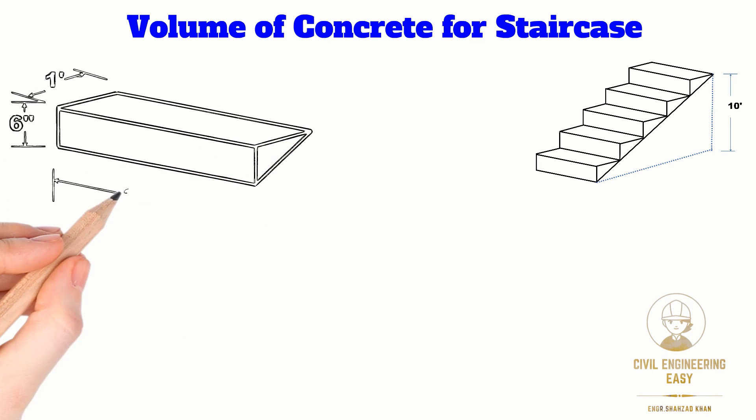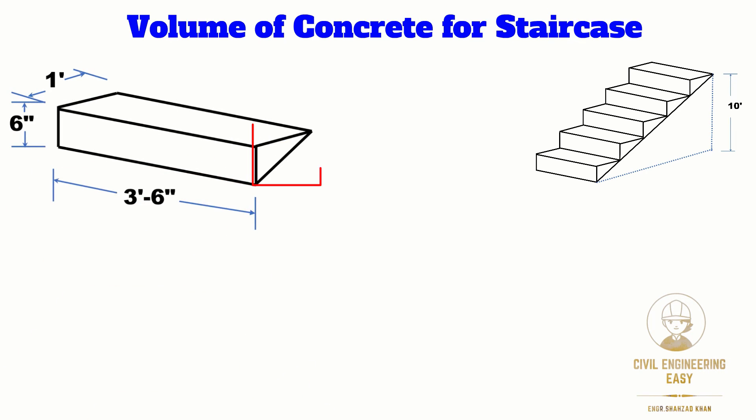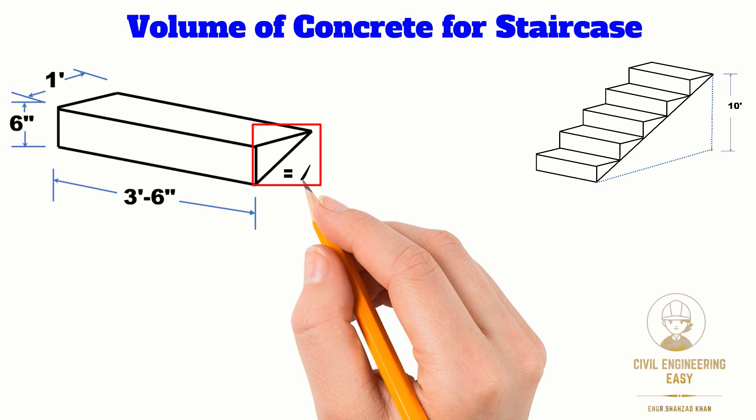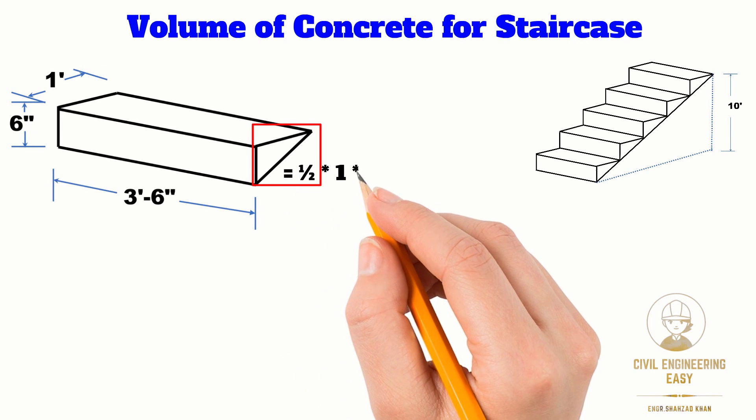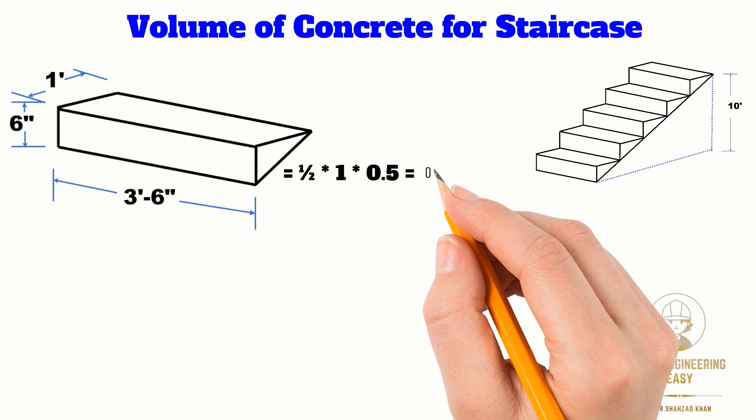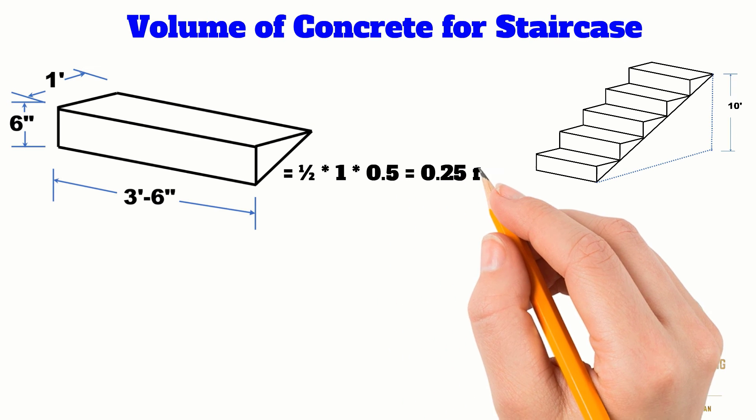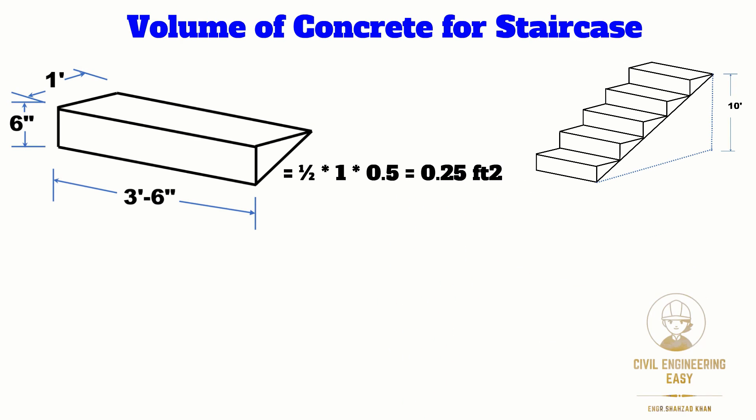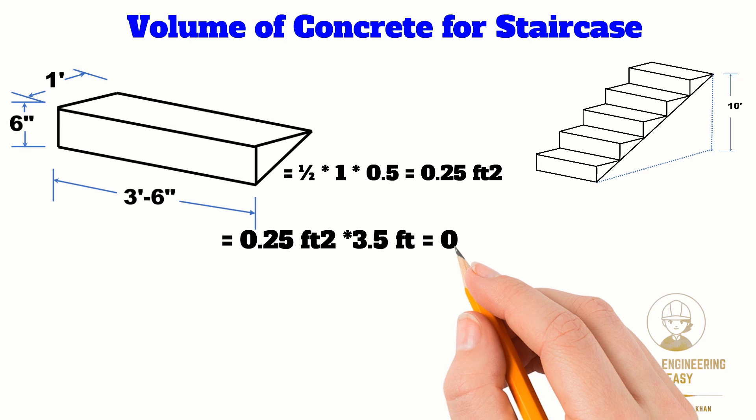To find the volume of concrete for a single step, find the area of the triangular shape: one-half times base, which is 1 foot, times height, which is 0.5 feet. By calculation, the area is 0.25 square feet. Multiply this area by the length of one step, 3.5 feet, to get the volume: 0.25 square feet times 3.5 feet equals 0.875 cubic feet.